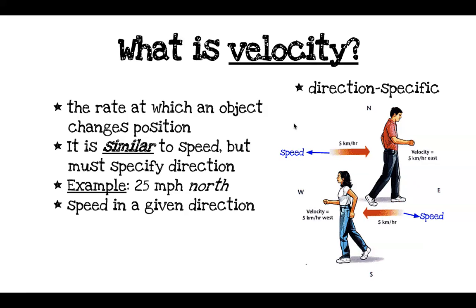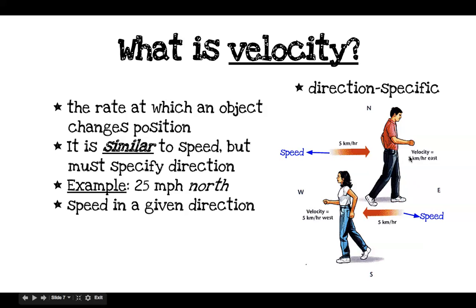So what is velocity? There is a difference between speed and velocity. Velocity is the rate at which an object changes position — it is similar to speed, but it must specify direction. The man's speed is 5 kilometers per hour, and his velocity is 5 kilometers per hour east. The woman's speed is also 5 kilometers per hour, so they have the same speed, but her velocity is 5 kilometers per hour west — so they have different velocities.